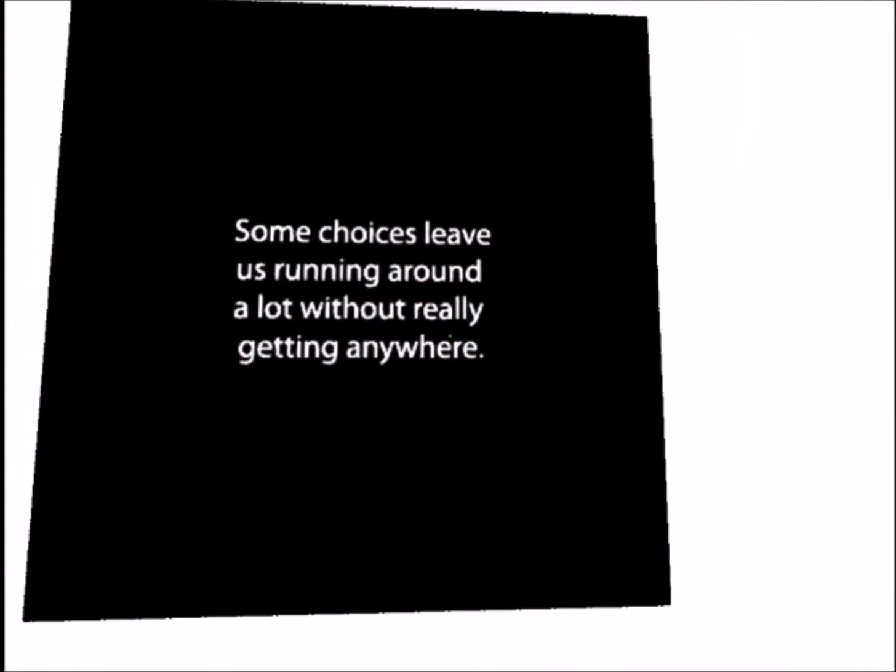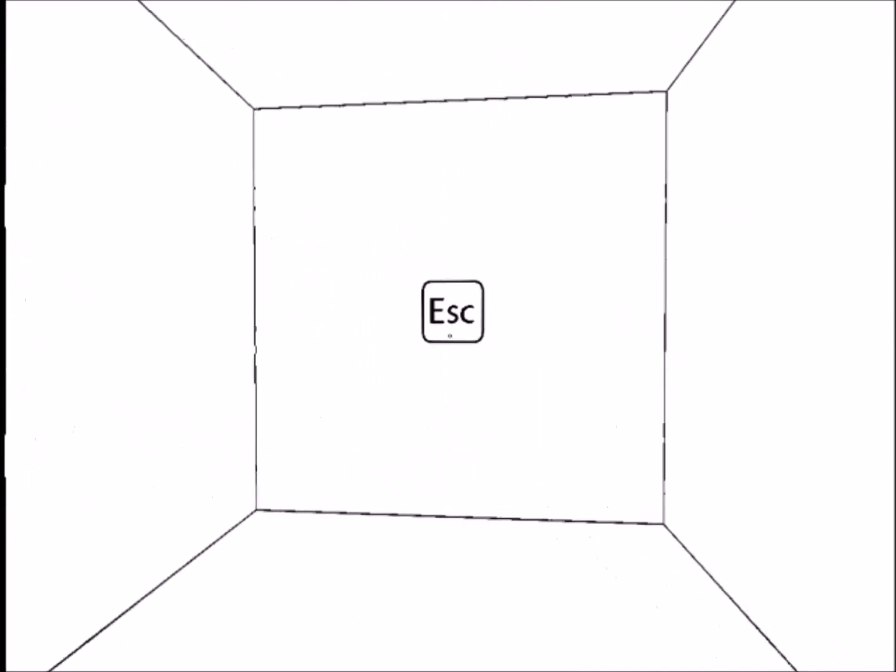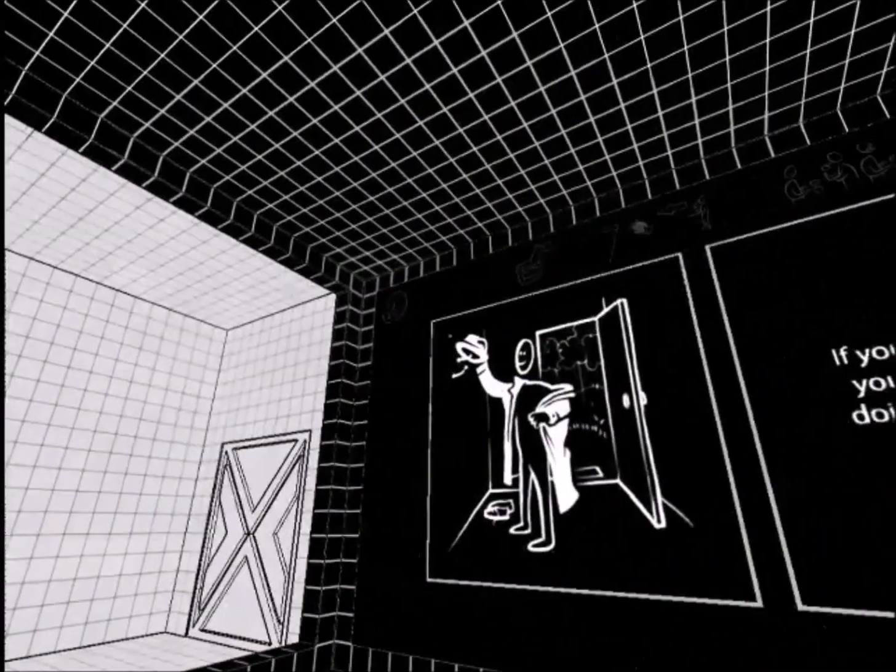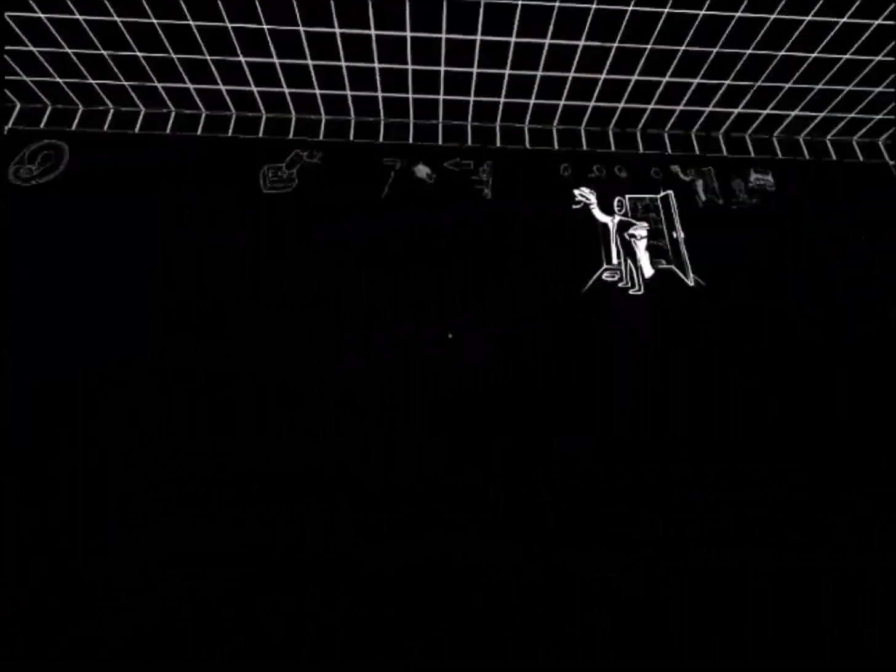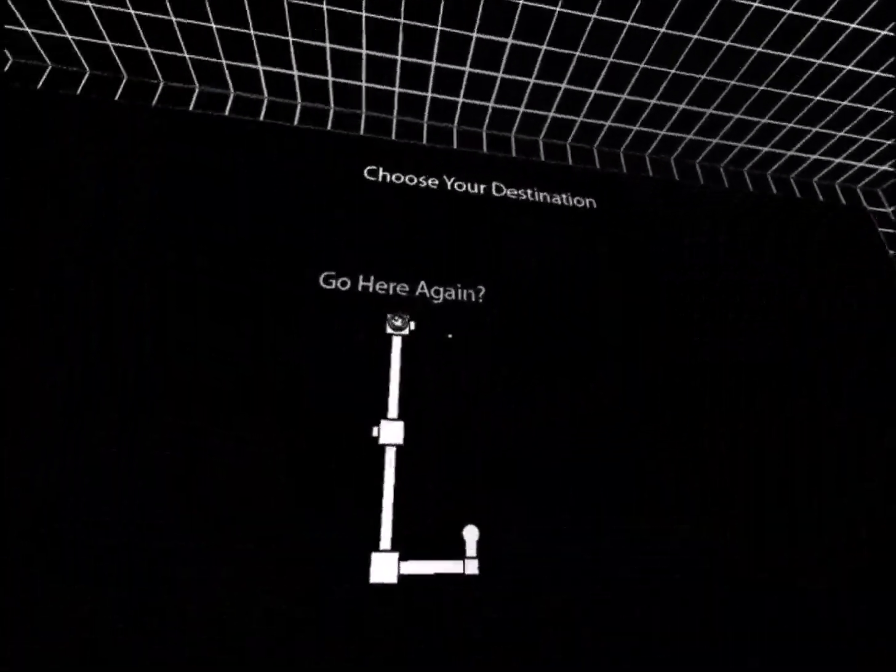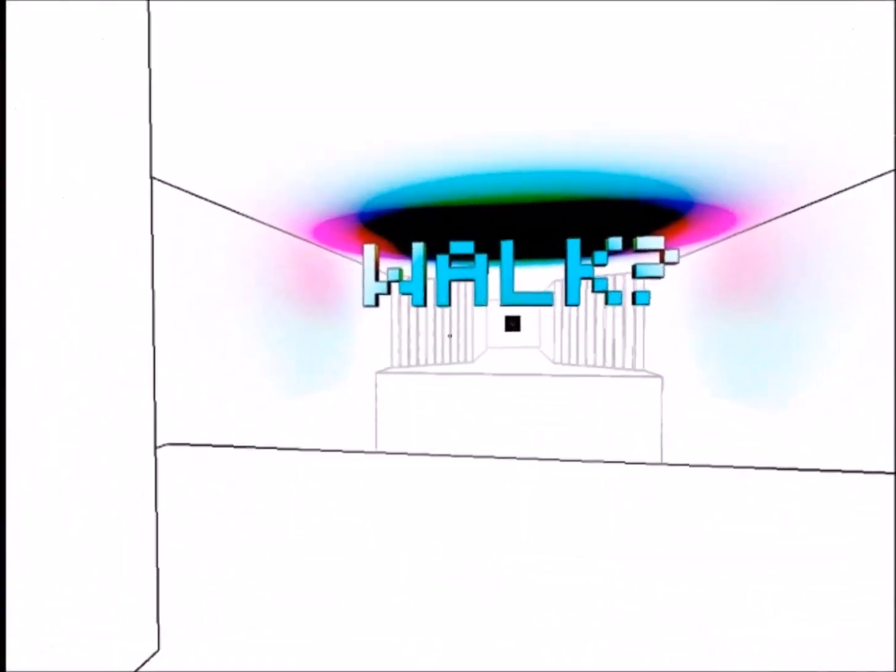First of many mechanics we're gonna learn. Some choices leave us running around without really going anywhere. So, as you can see, we are now boxed into a room, press escape, and we return back to this area, where we can view everything we've collected so far, and view the map of where we've gone. So, let's just start at the beginning.